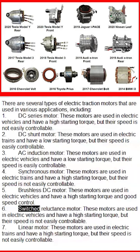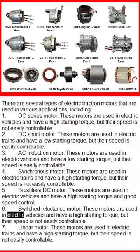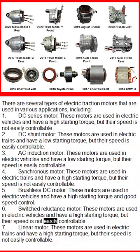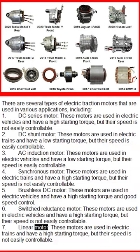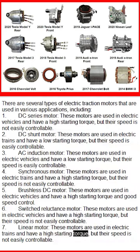Sixth, the switched reluctance motor: these motors are used in electric vehicles and have a high starting torque, but their speed is not easily controllable. Seventh, the linear motor: these motors are used in electric trains and have a high starting torque, but their speed is not easily controllable.